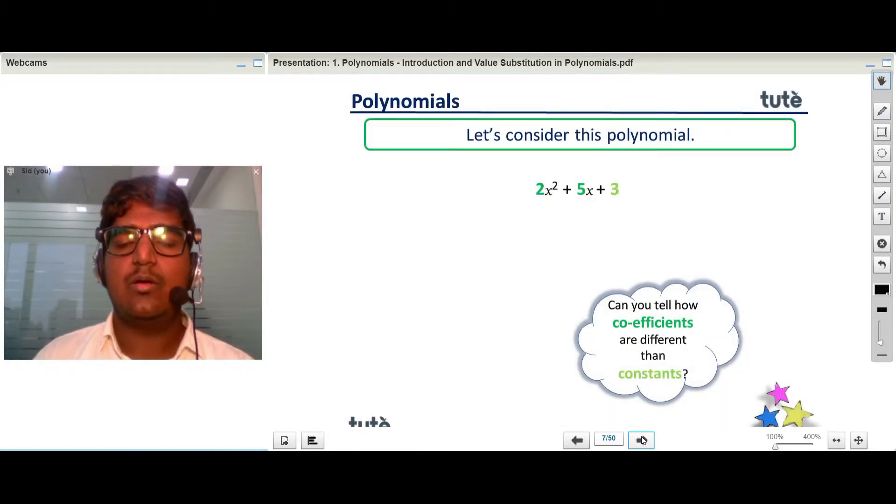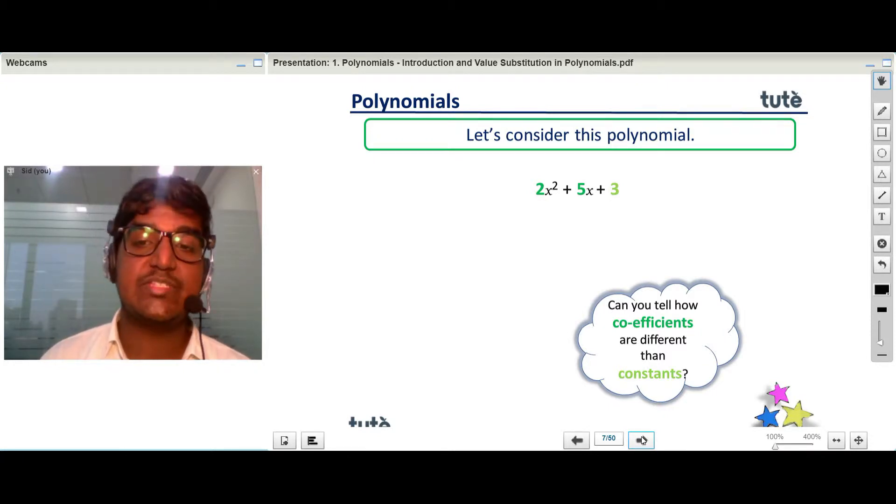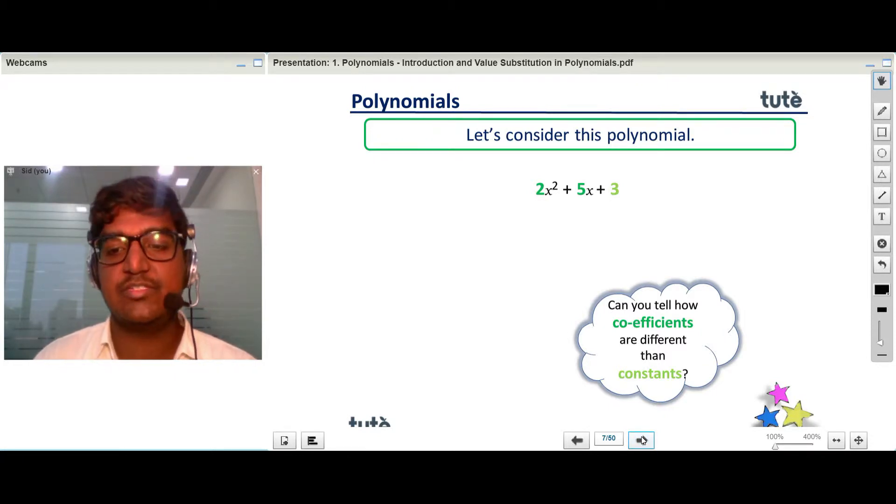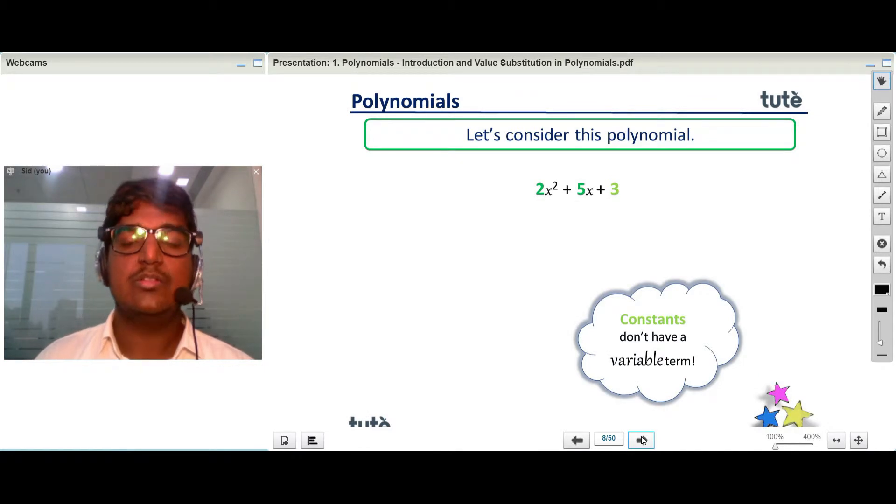What is the difference with 3 and the 2 and 5? As you can see, 3 is not associated with the variable. That is why it's a constant, and the ones which are associated with the variable are the coefficients. Constants don't have a variable term.